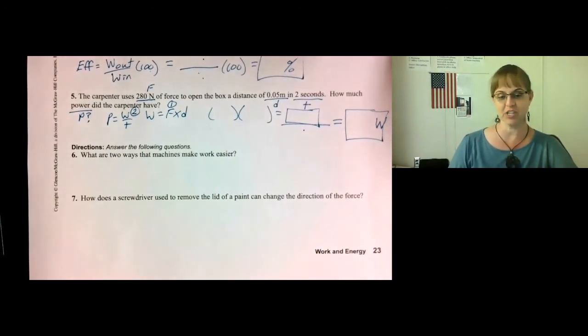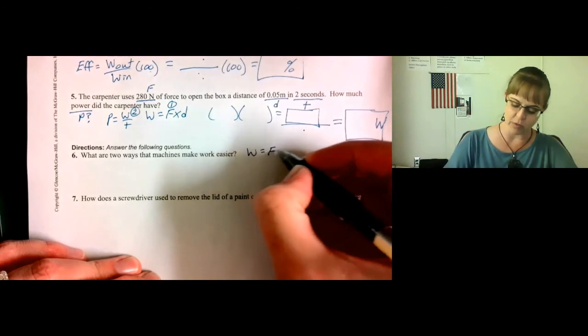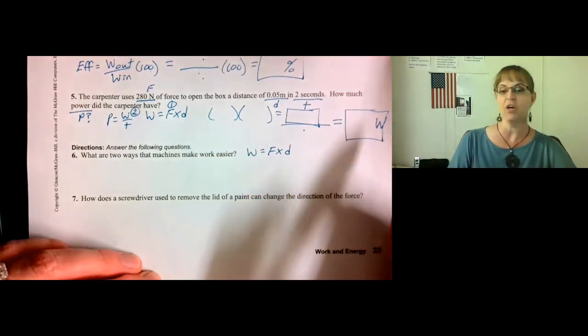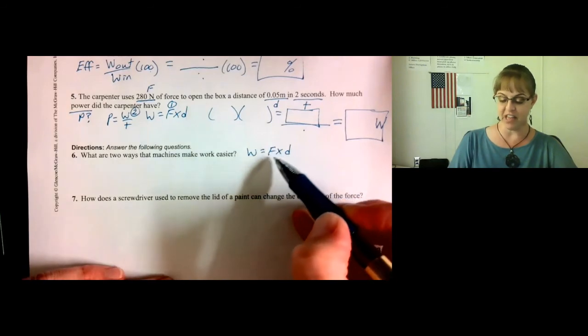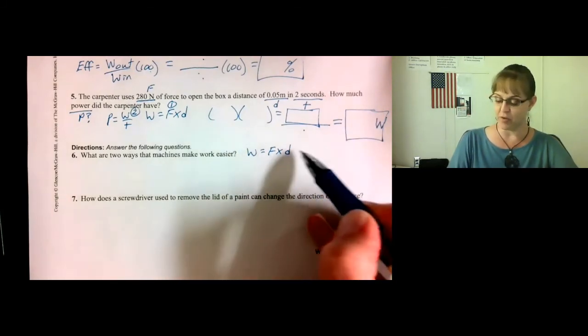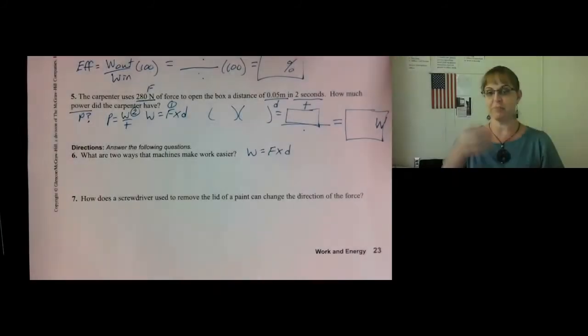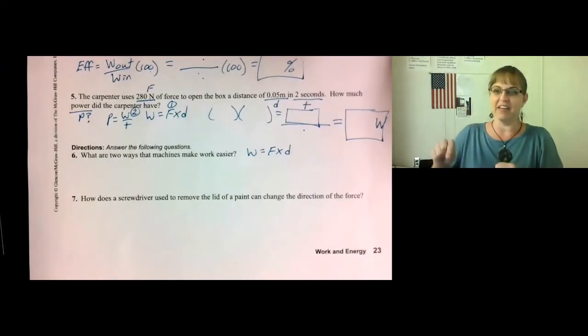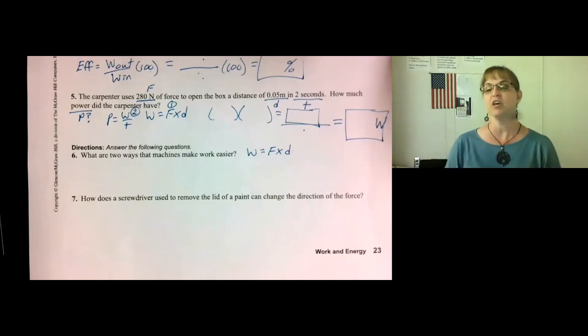Number six. What are two ways that machines make work easier? Well, remember your formula, work equals force times distance. So, if the force is lower, that's how you make the work easier, is you lower the force, and the work is the same, therefore the distance has to increase. So, one way a machine makes work easier is that it increases the input distance so that the input force can decrease. The second way a machine makes work easier is by changing the direction.